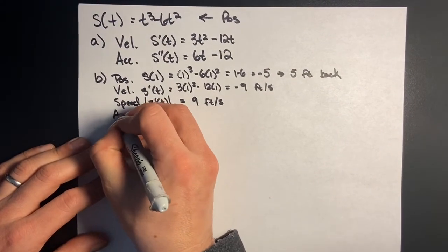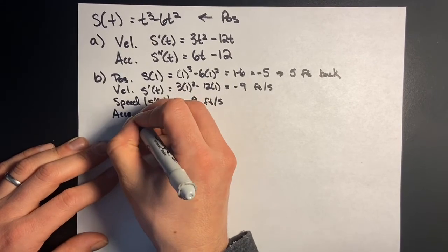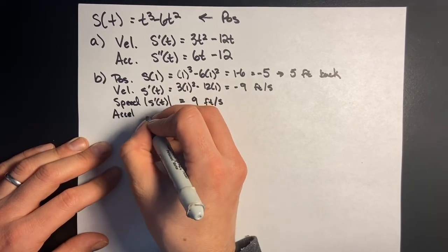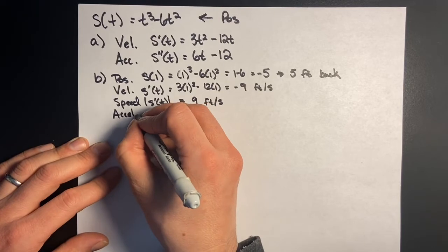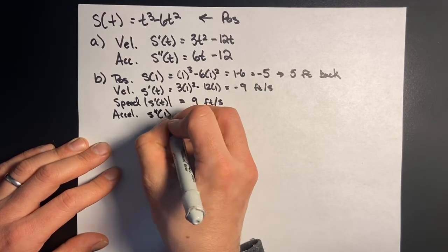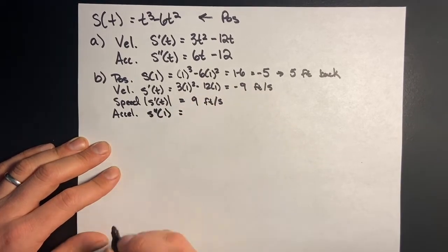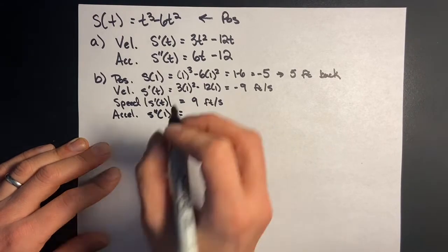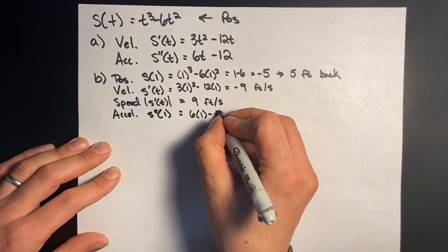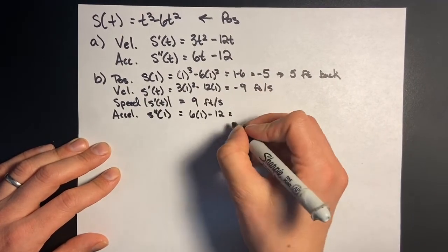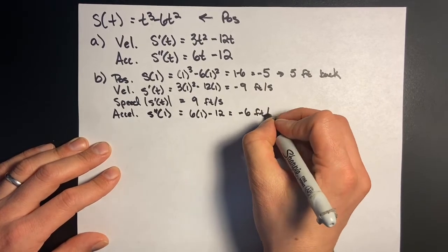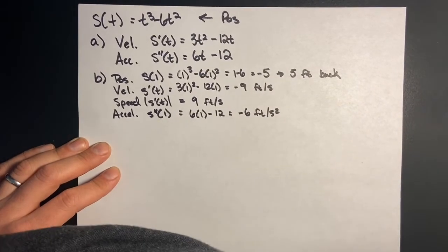The instantaneous acceleration is s''(1), which equals 6 times 1 minus 12, giving negative 6 feet per second squared.